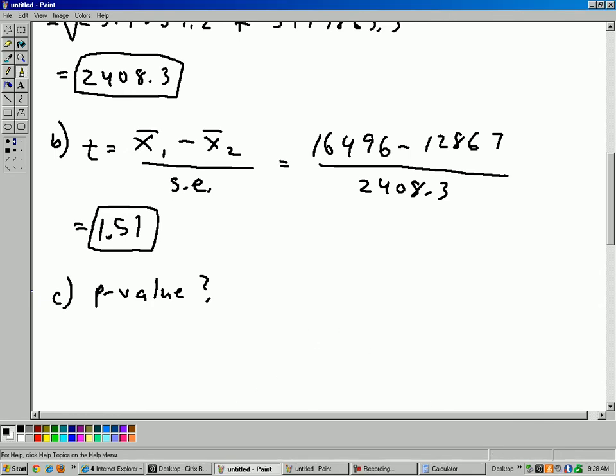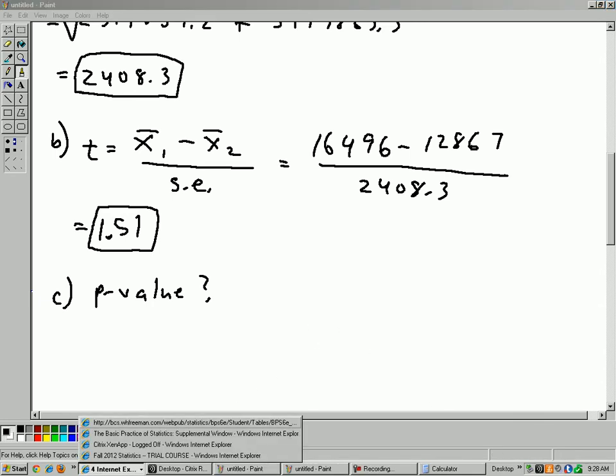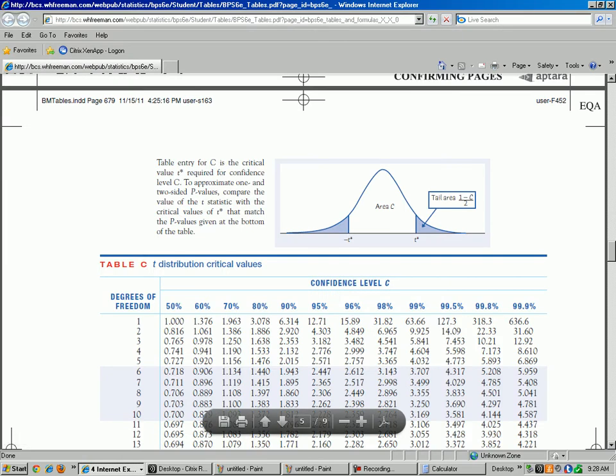So I've got the table here. Here it is. This is table C. This is in the back of the book. And I'm looking up my t-value, 1.51, and I want to see what is the area. And this is the one-tailed test.